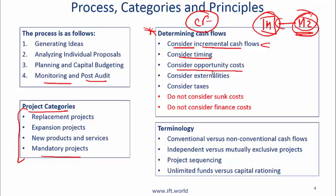Consider opportunity costs. If you are using your own facility for which you are not paying rent explicitly but you could rent it out for a hundred dollars, then this hundred dollars needs to be part of your cash flow — it needs to be considered as a cost.